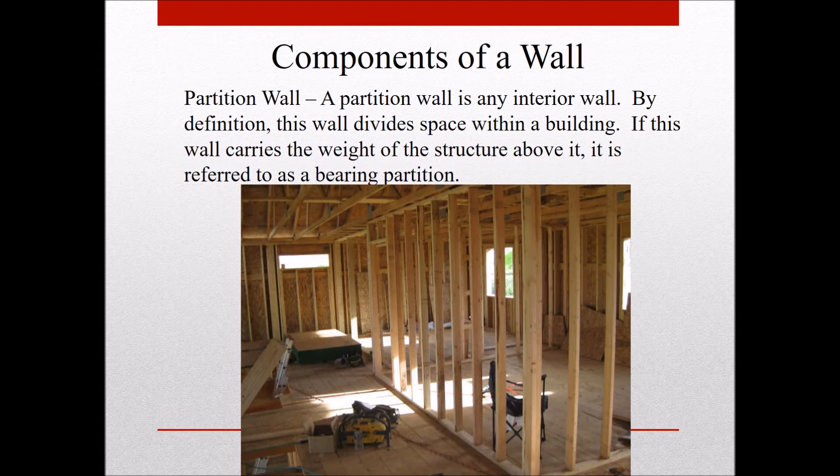The next term is a partition wall — just any interior wall that divides space within a building. In this instance the wall does not carry any weight; you can see there are no ceiling joists sitting on top of it, so it's not a weight-bearing wall and is referred to as a partition wall. If it carried weight, we would call it a bearing partition.